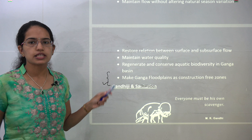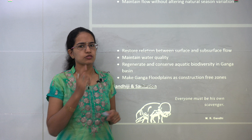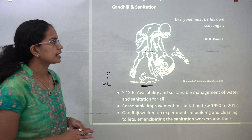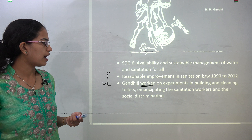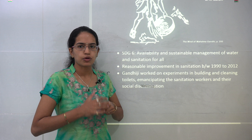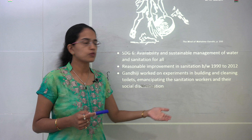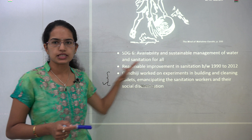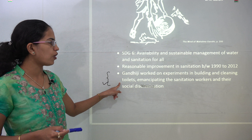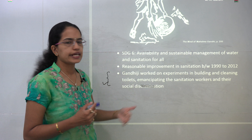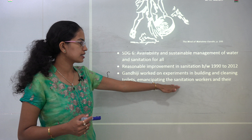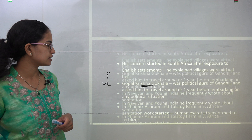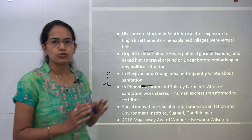The next is the National Mission for Clean Ganga. It covers five states — Uttarakhand, Bihar, UP, Jharkhand, and West Bengal — covering an area of 8.6 lakh square kilometers, nearly 46% of the population, 118 towns, and 1,657 gram panchayats. Initiatives include a GIS platform for monitoring, effluent management systems, sanitation coverage, model Dhobi ghats, maintaining natural seasonal flow variation, maintaining water quality, conserving aquatic biodiversity, and making Ganga flood plains construction-free zones.